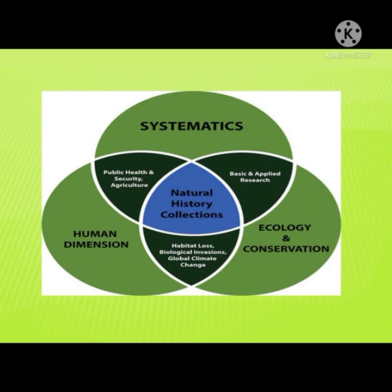Here is how systematics is used with other branches and fields of science. In systematics, it deals with public health and security, agriculture, natural history collections, and basic and applied research. It deals also with habitat loss, biological invasions, and global climate change. It deals also with the human dimension, ecology, and conservation.